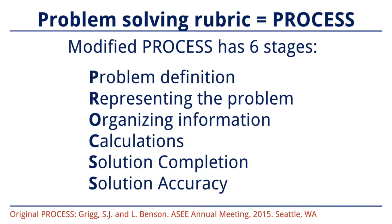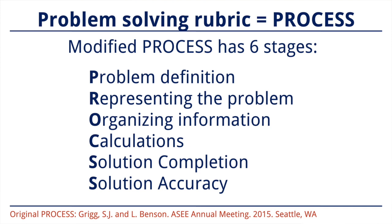The R is for representing the problem. And if you're familiar with engineering problems, many require engineering diagrams to solve. So here, PROCESS assesses how well an engineering diagram represents the problem statement. O is for organizing information. At this stage, a reader examines how well various pieces needed to solve the problem are presented. These pieces could include information from charts, data tables, formulas, and so on. You could also be given values or information from problem statements.